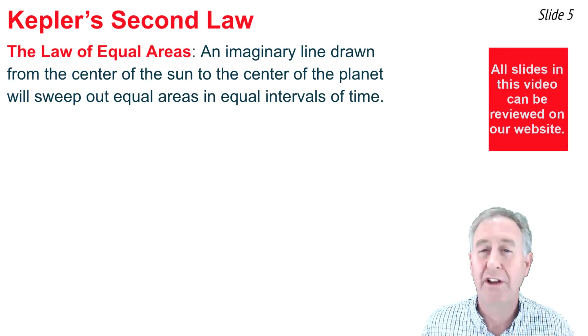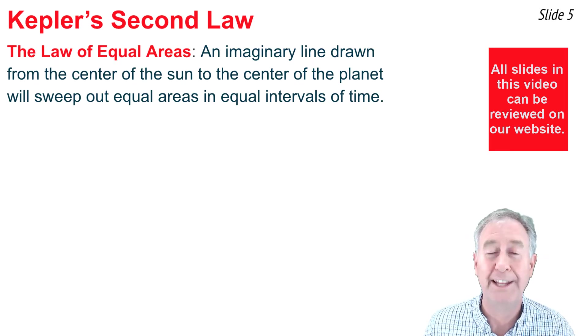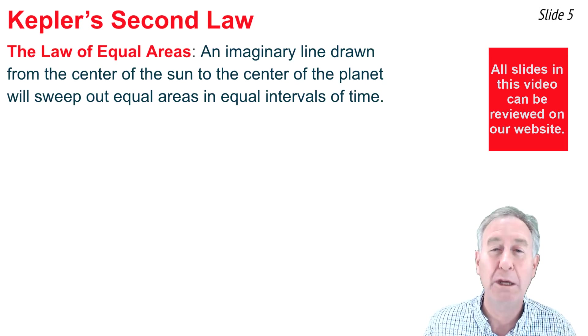Kepler's second law is known as the law of equal areas, and it states that an imaginary line drawn from the center of a planet to the center of the sun would sweep out an equal area in an equal period of time.